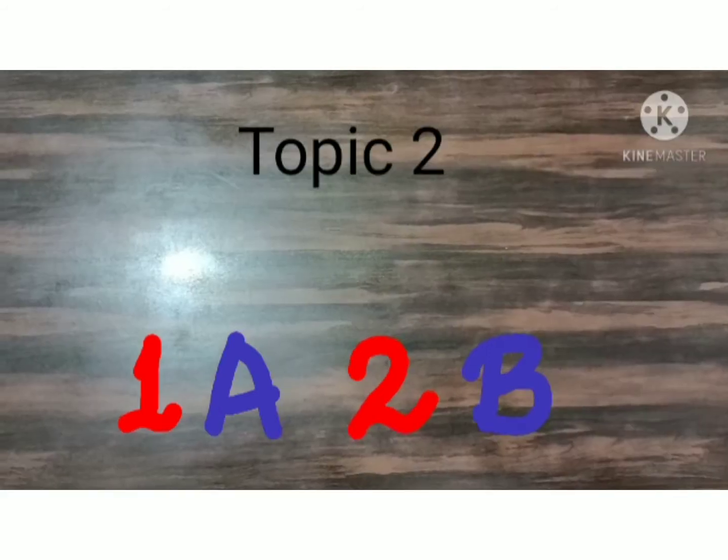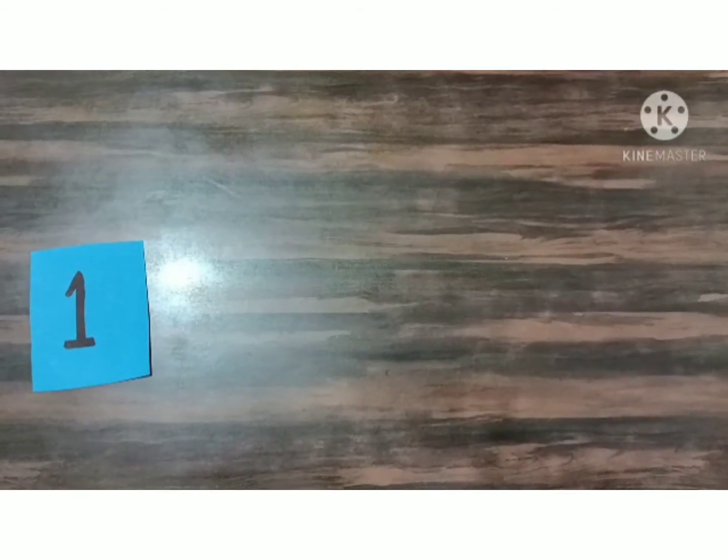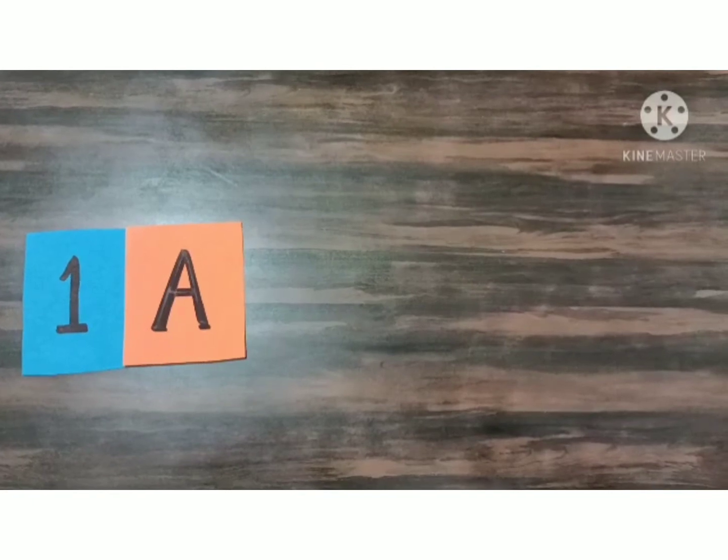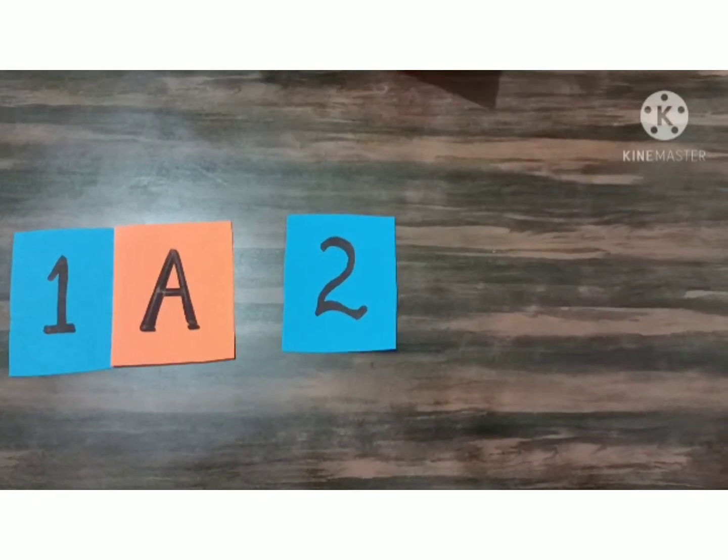Now, let's make number and alphabet patterns. First, I am going to keep the number 1. Number 1 will be pairing with alphabet A. 1A. After that, I am going to keep 2B.